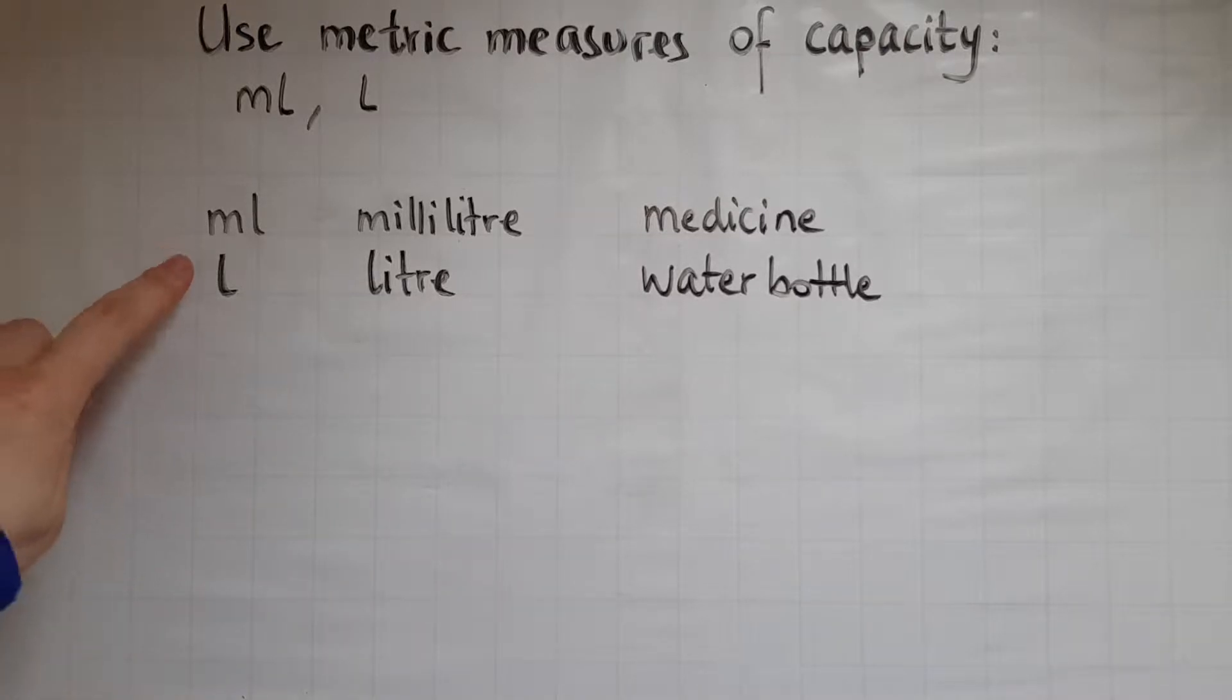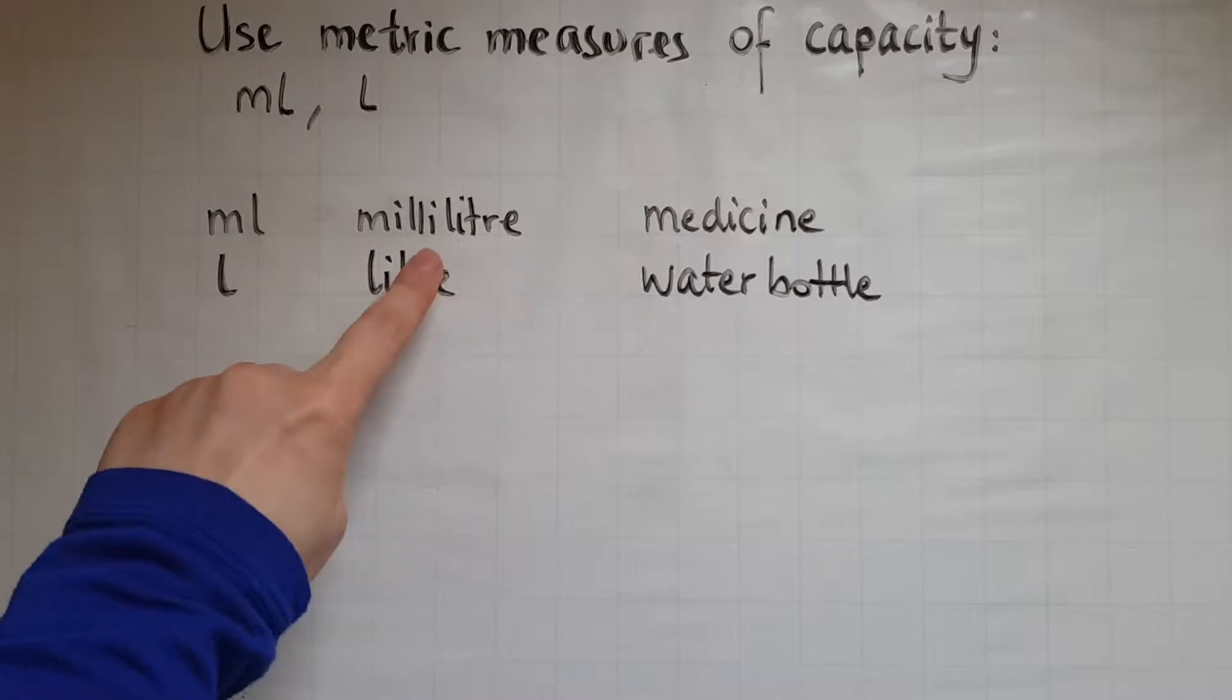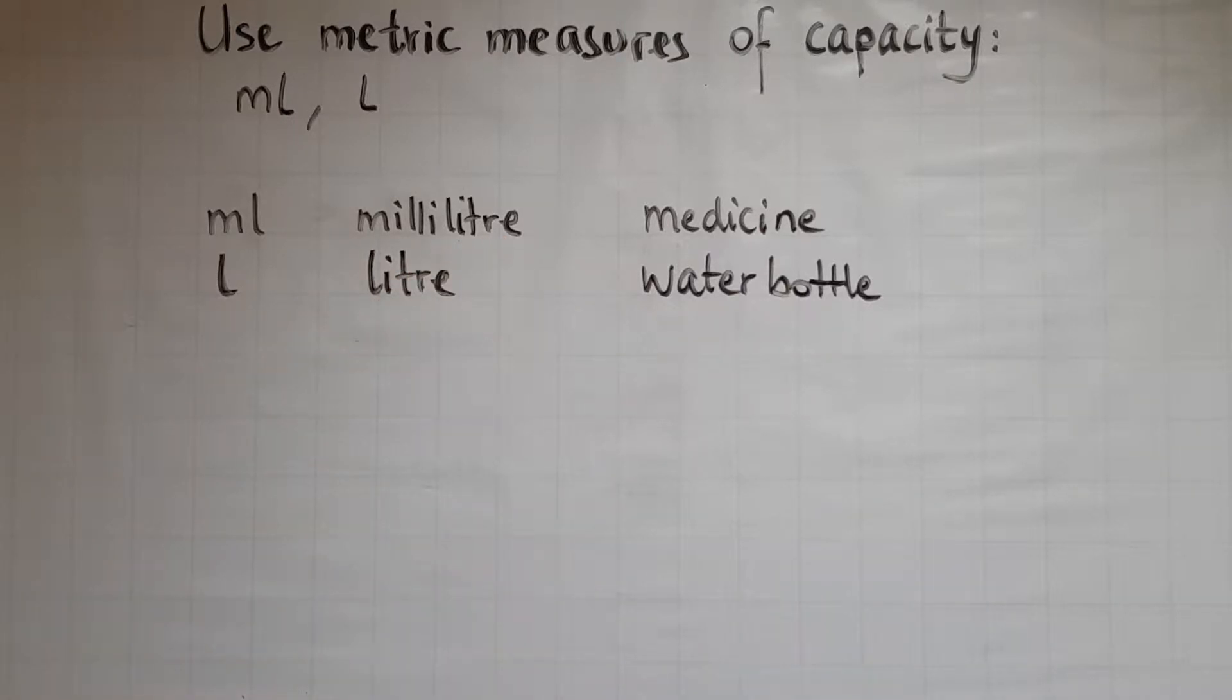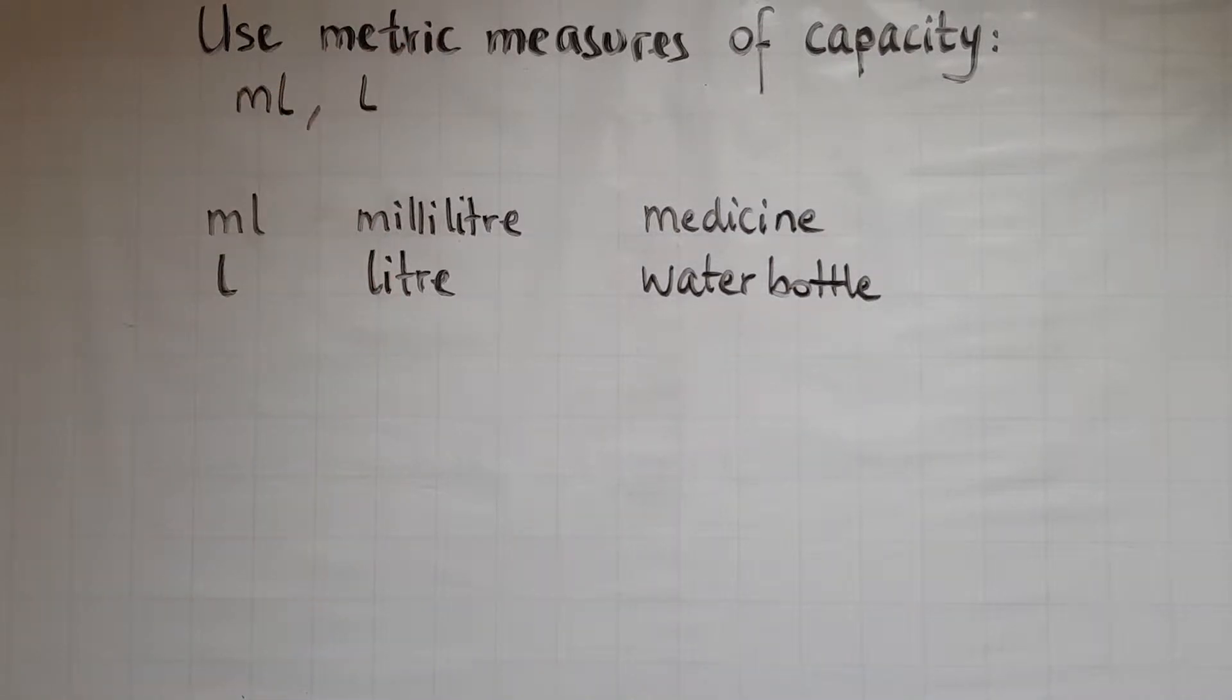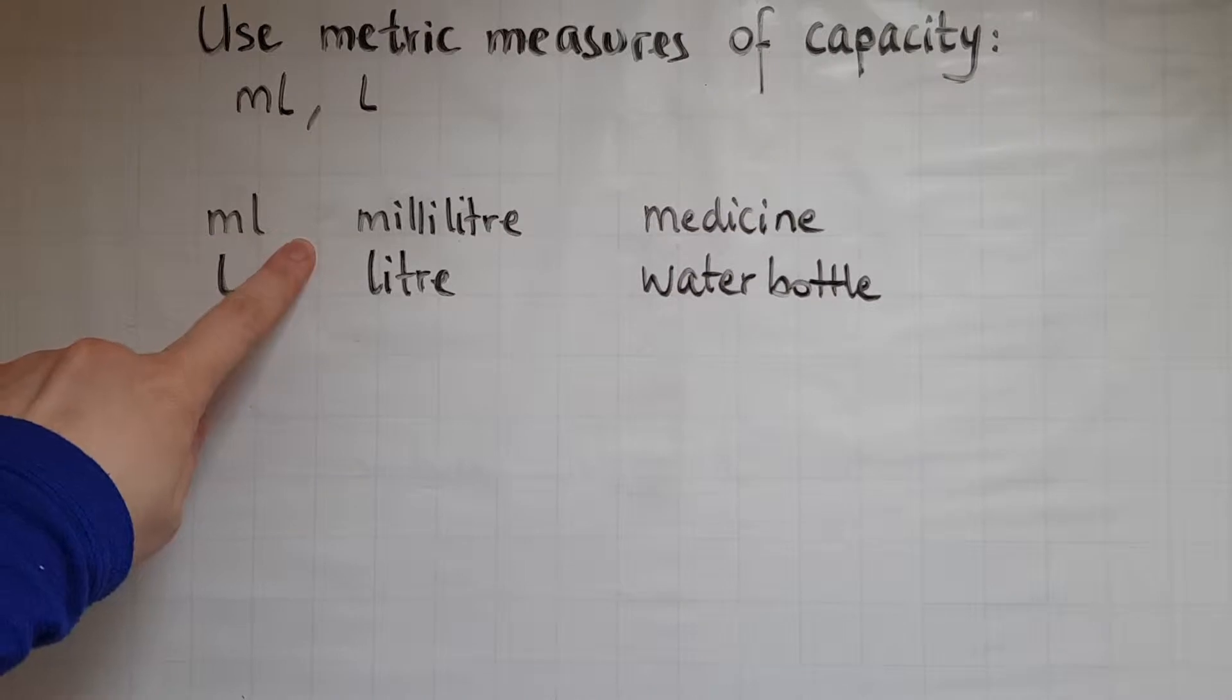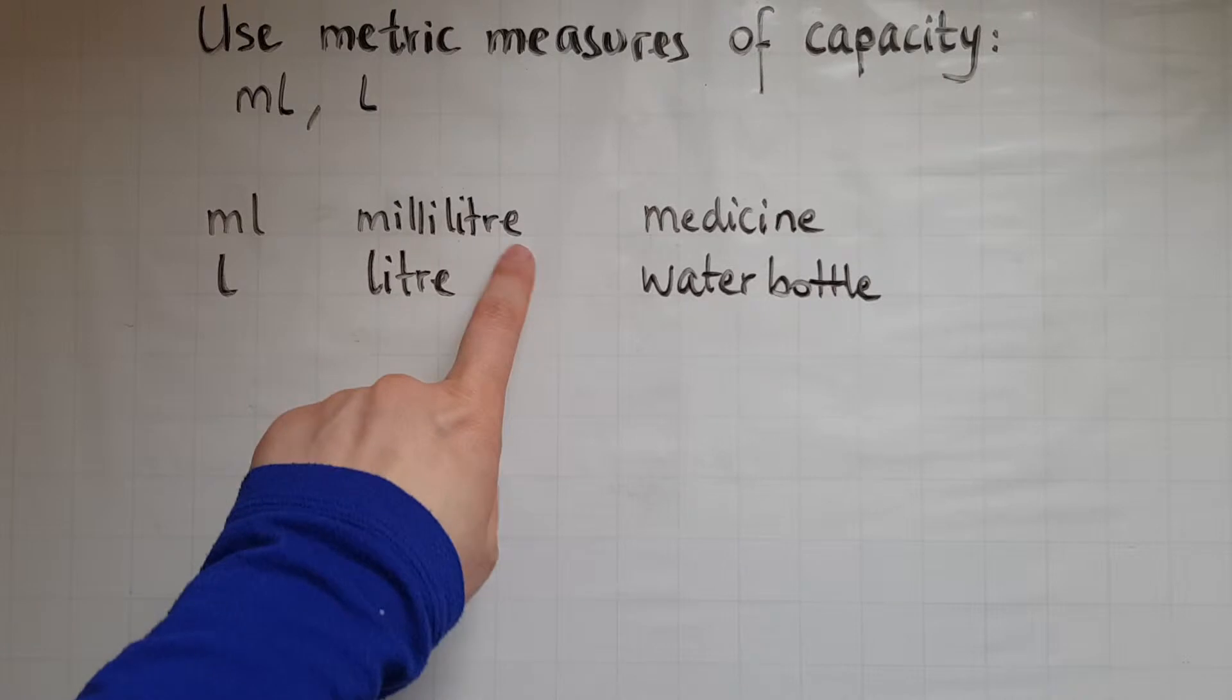As you can see, milliliters and liters have the word liter in them, which sounds like meter as well - that's where the metric comes from. Milliliter, so that's the short form: M stands for milli and L stands for liter.